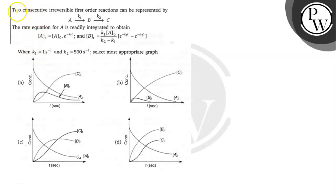Hello, let's read the question. The question says here, two consecutive irreversible first-order reactions can be represented by A gives rise to B and B gives rise to C.